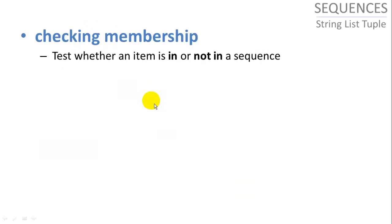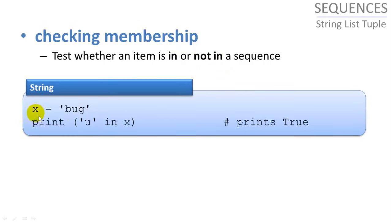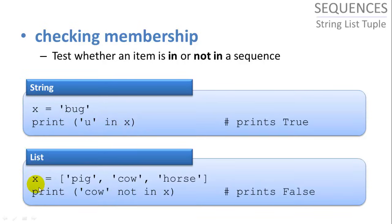Checking membership, test whether or not an item is in or not in a sequence using keywords in and not in. So it's very simple to use. So if we have x equals bug and we want to print u in x, we'll print true if u is actually in x and it'll print false if it's not. So in our list, pig, cow, horse, print cow not in x. We'll print true if cow is not in x. However, cow is in x, so it prints false. So that's checking membership using the in and not in keywords.